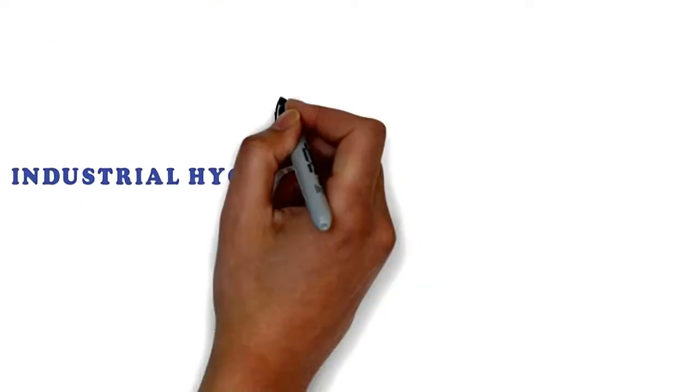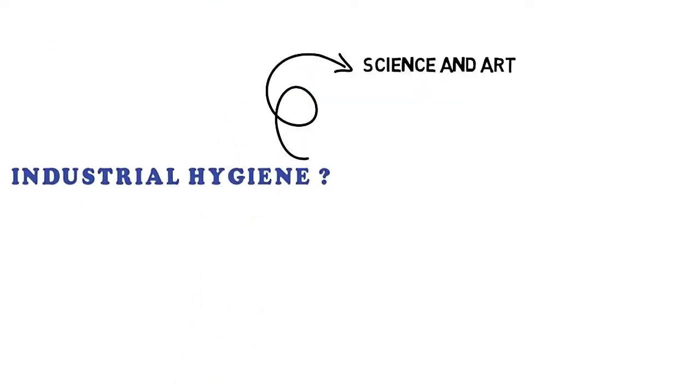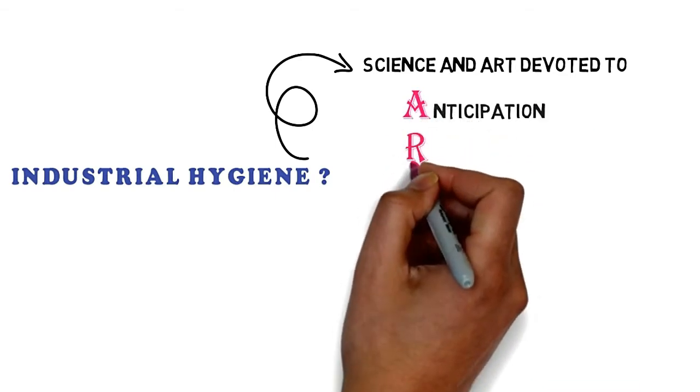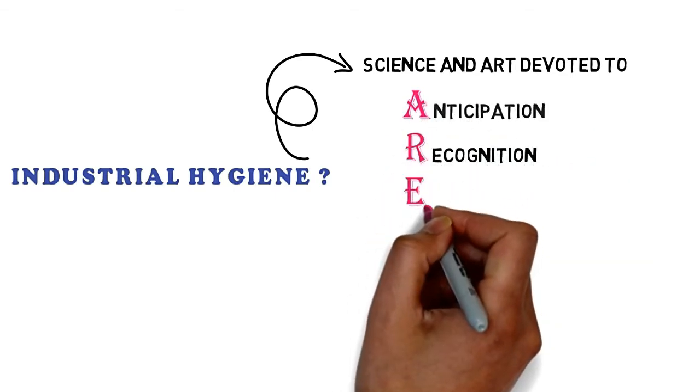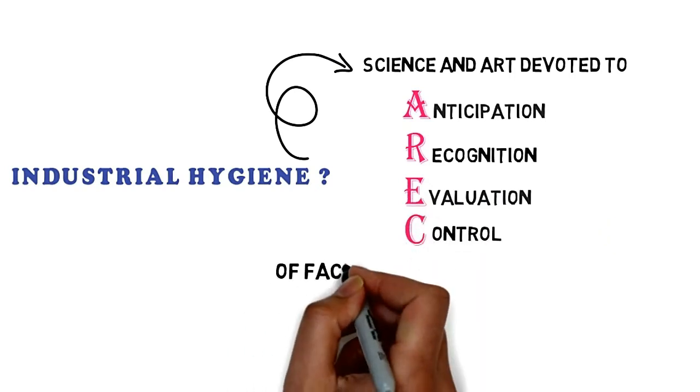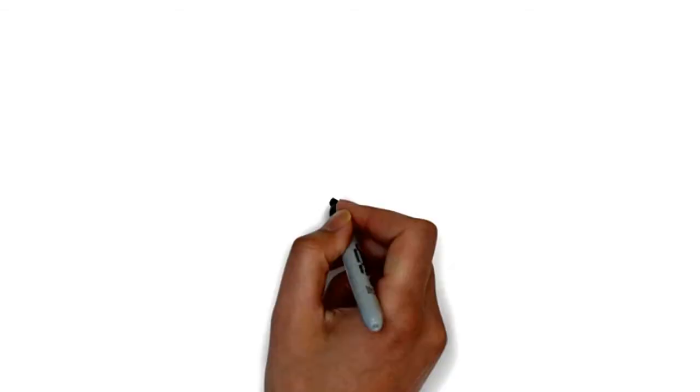What is industrial hygiene? It is a science and art devoted to anticipation, recognition, evaluation, and control of factors and stresses in the workplace.